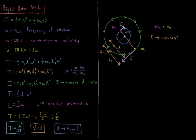So what is the kinetic energy of the system? The kinetic energy T is equal to one-half mass one times velocity one squared — kinetic energy of atom one — plus one-half mass two times velocity two squared — kinetic energy of atom two.